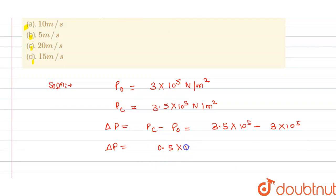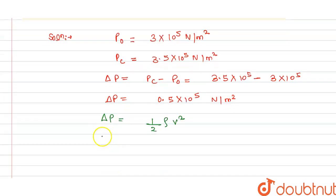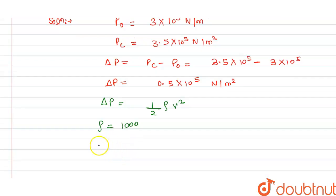And we know that change in pressure is equal to (1/2)ρv², where ρ is density and v is velocity. We have density of water is 1000 kg/m³, and we have to calculate v, the velocity.